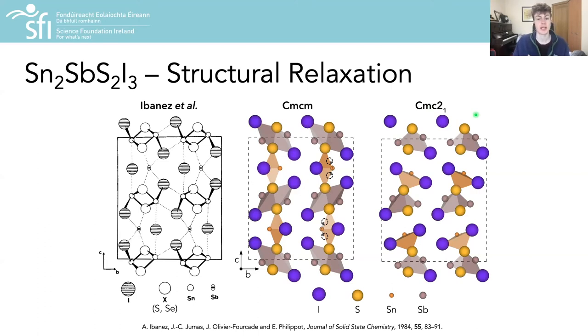So what this means, we believe, is that experiment is in fact seeing an average over many different Cmc2₁ configurations, which averages out to a Cmcm structure according to XRD measurements.